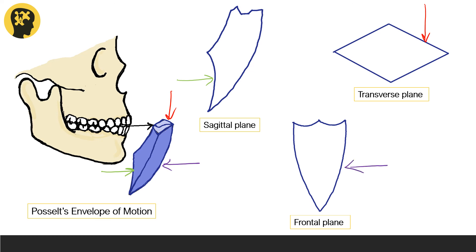When we take these border movements on these three different planes and put them together, we get this three-dimensional structure. This is what Dr. Posselt called Posselt's envelope of motion. The boundaries of this envelope would be the border movements of the mandible in all three planes. All the functional movements of the mandible occur within the boundaries of this Posselt's envelope of motion.